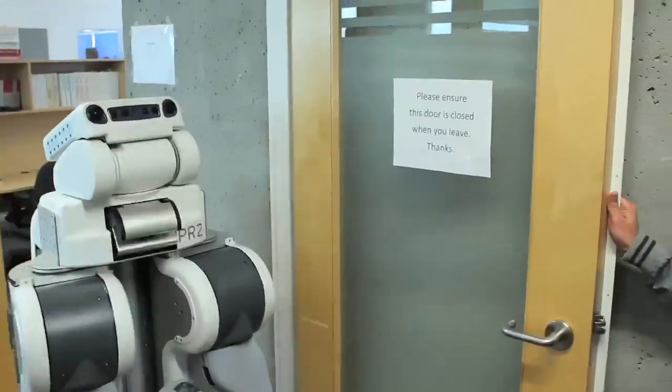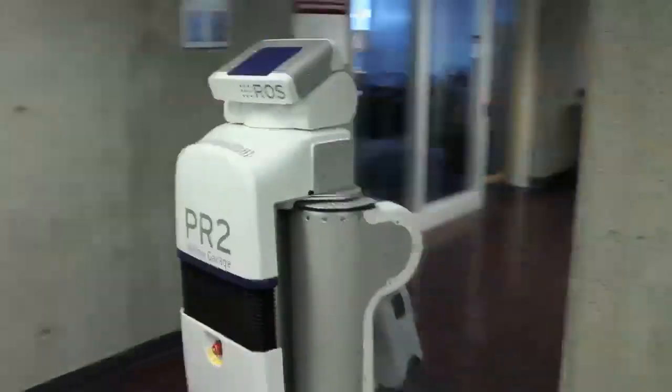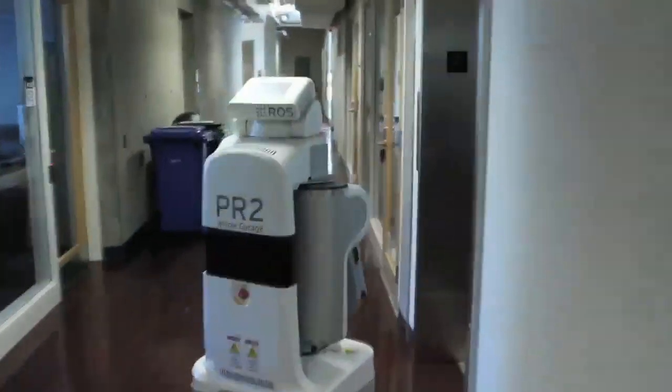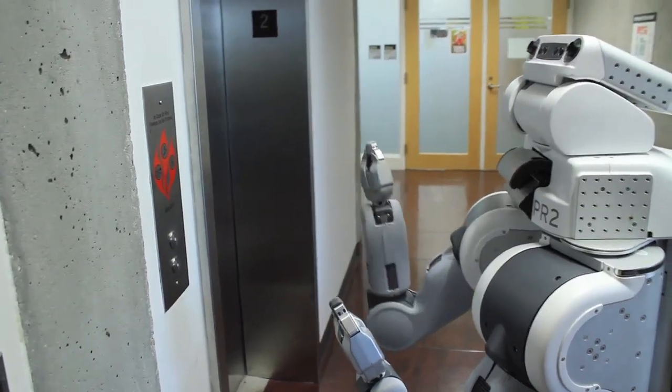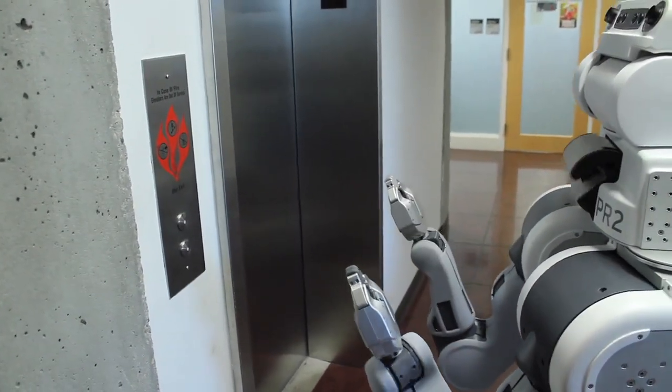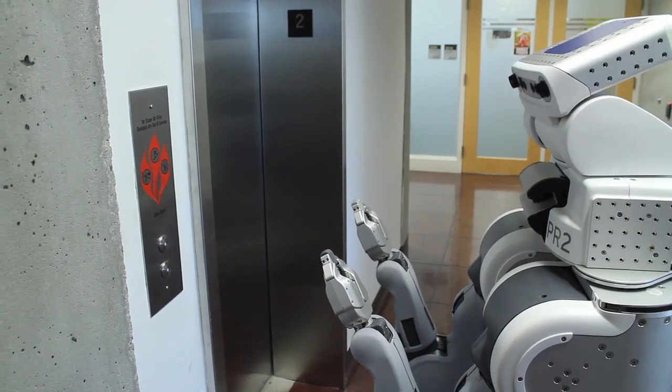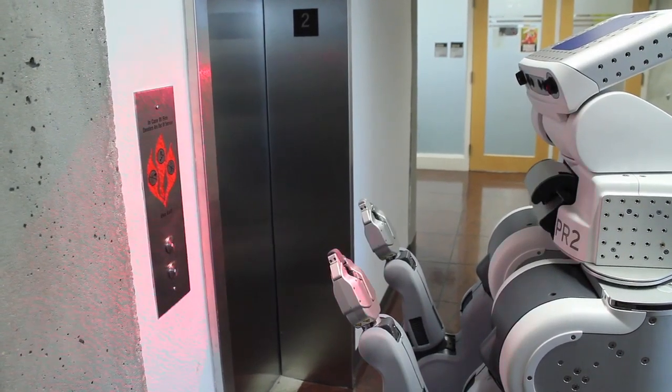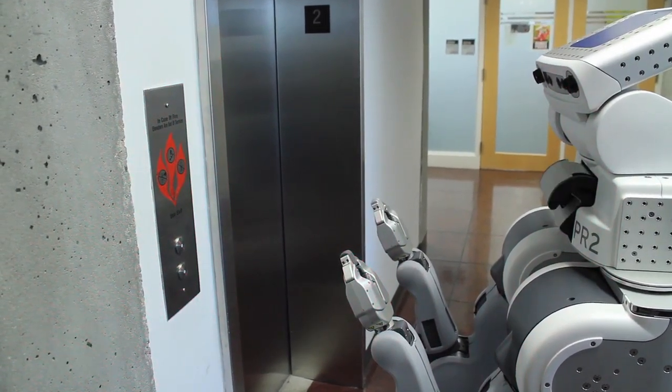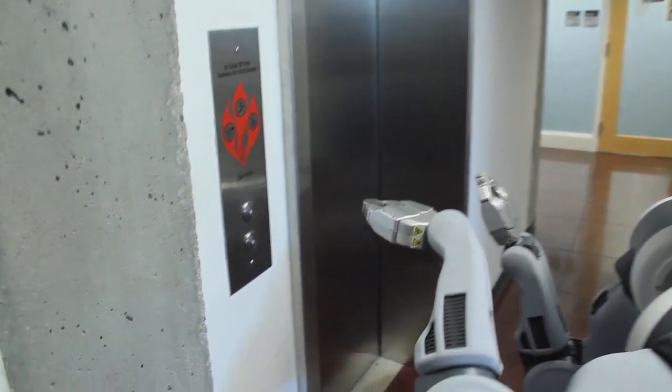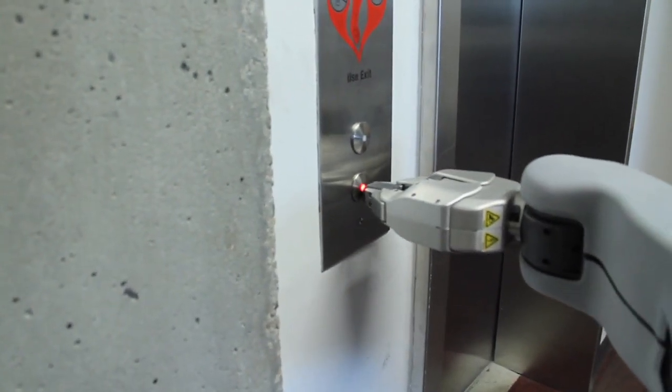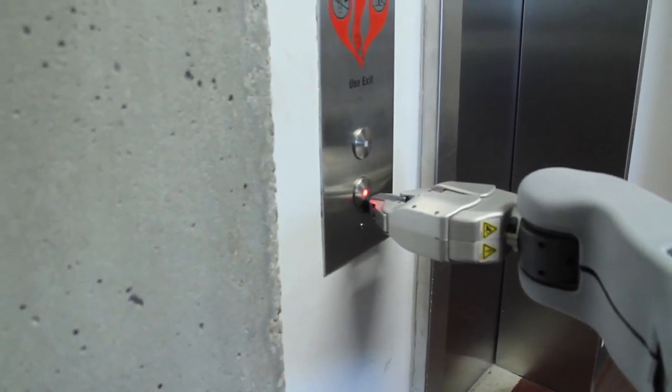Once PR2 has arrived in front of the elevator, the next step is to find the elevator control buttons within the robot's workspace. We use template matching and PR2's stereo cameras with textured light projection to accomplish this. Once the 3D coordinate with respect to the camera is found, we use PR2's built-in kinematic solver to move the arm to press the button.